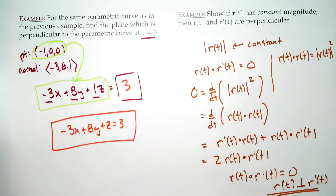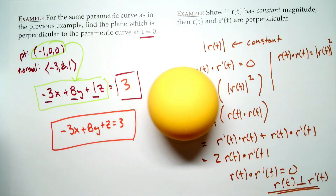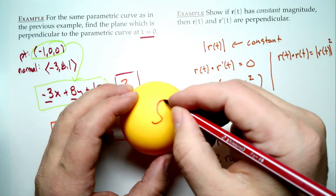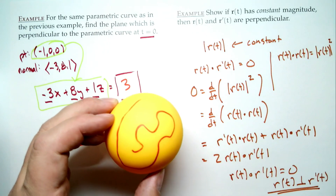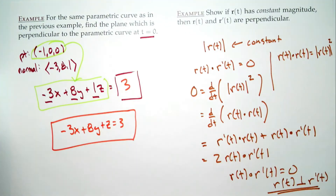We will actually use this fact later. You might ask: does constant magnitude just mean the curve isn't moving? No, because you might live on something that looks like a ball. If the center of the ball is at the origin, you can move around on the ball and your magnitude — your distance from the origin — stays the same. So just because your magnitude is constant doesn't mean you are stationary. And that's it for today — see you next time.